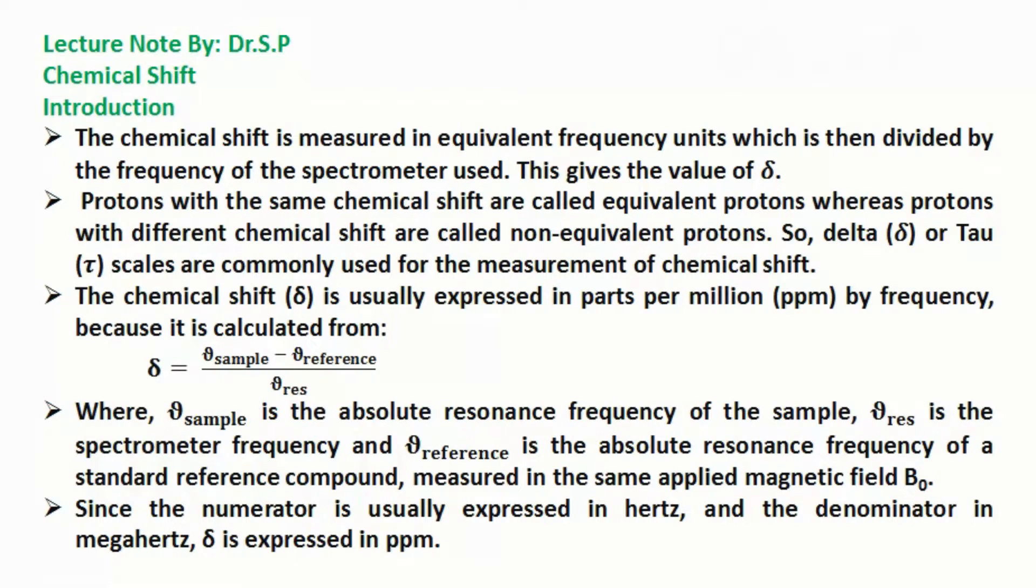The chemical shift δ is usually expressed in parts per million (ppm) by frequency because it is calculated from: δ = (ν_sample - ν_reference) / ν_res. Where ν_sample is the absolute resonance frequency of the sample, ν_res is the spectrometer frequency, and ν_reference is the absolute resonance frequency of a standard reference compound, measured in the same applied magnetic field B₀. Since the numerator is usually expressed in hertz and the denominator in megahertz, delta is expressed in ppm.